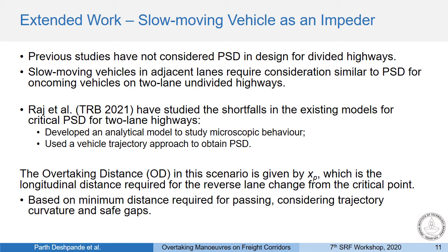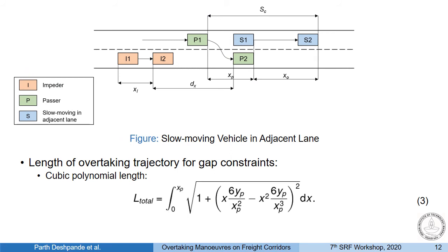We also extended the work to consider a slow moving vehicle in an adjacent lane, though traditionally PSD is not defined for such a scenario. We find it important to include this in the context of freight corridors. The key is to treat the slow moving vehicle similarly to how an oncoming vehicle is considered in other PSD models. We already developed an analytical model for the oncoming vehicle case using the critical point model, and that has been adopted here. For the slow moving vehicle, things are simpler — we provide a side distance equal to the required distance for a reverse lane change when the vehicle returns to its original lane after overtaking.